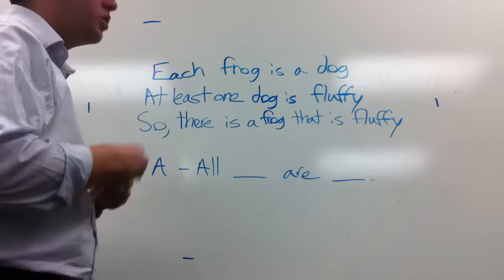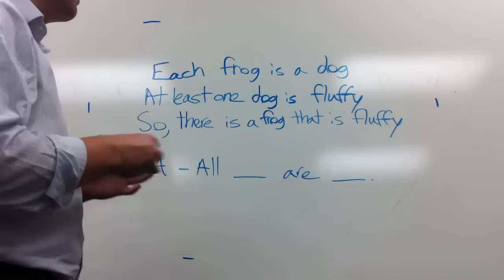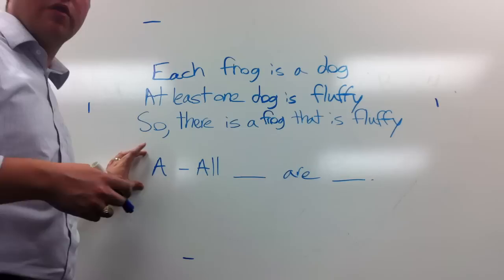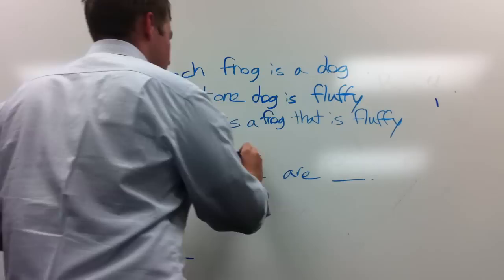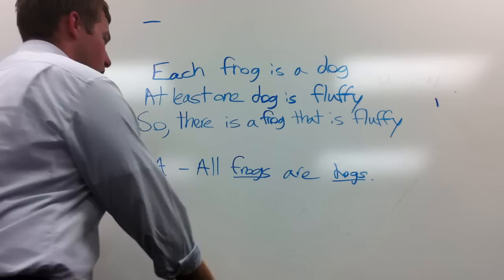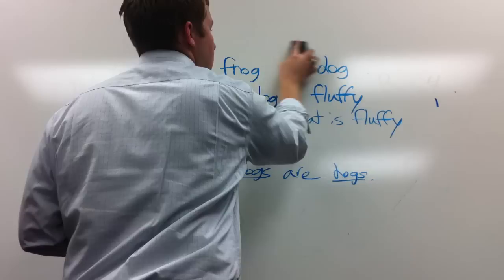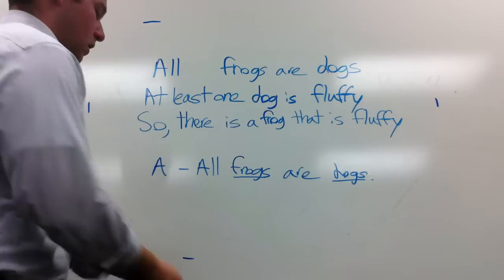There's another way to do it if you're not sure: process of elimination. There are only four options — A, E, I, or O. Is it an E statement trying to say no dogs are frogs? No. Is it an O statement saying some dogs are not frogs? No. So we've identified the first line is an A statement, and we rewrite it as: 'All frogs are dogs.'